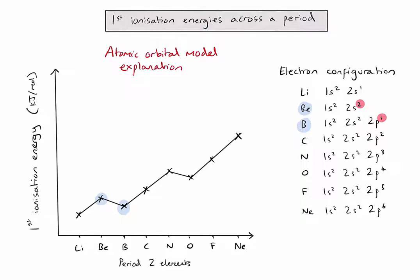Between boron and carbon, we see an increase in first ionization energy consistent with the general trend. Both outer electrons are in the 2P sub-level, so the higher ionization energy for carbon is caused by the extra proton in the nucleus, which increases electrostatic attraction to the outer electrons. The same reasoning applies from carbon to nitrogen: the outer electron is also in the 2P sub-level, but nitrogen has one more proton, so the greater electrostatic attraction makes it more difficult to remove that electron.